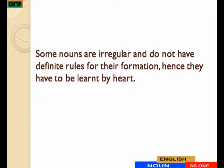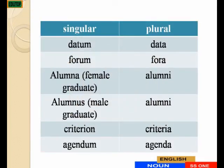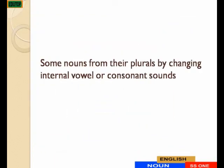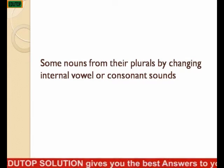Some nouns are irregular and do not have definite rules for their formation. Hence, they have to be learned by heart. Examples: datum is the singular while data is the plural; forum becomes fora; alumnus becomes alumni; criterion becomes criteria; agendum becomes agenda.